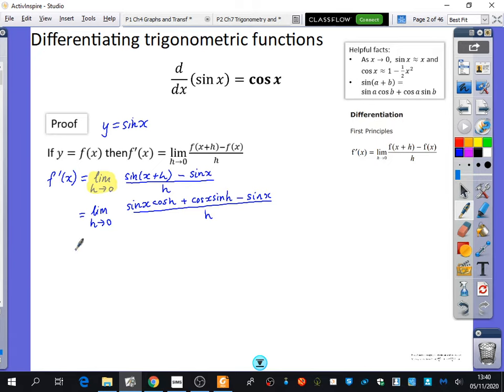Now we're going to see if we can do anything. This is perhaps the hardest part to spot. We have a sine x here and a sine x here, so I'm going to pull those together by factorizing. I will factorize the sine x parts. So I have the limit as h approaches zero, taking out a factor of sine x, and I would have cos of h minus one.